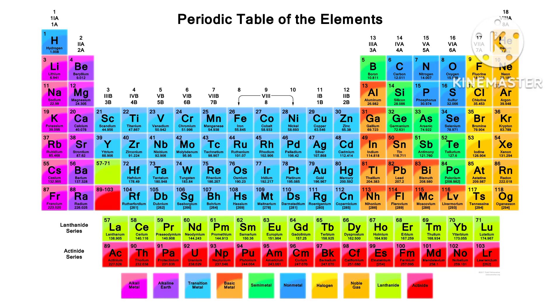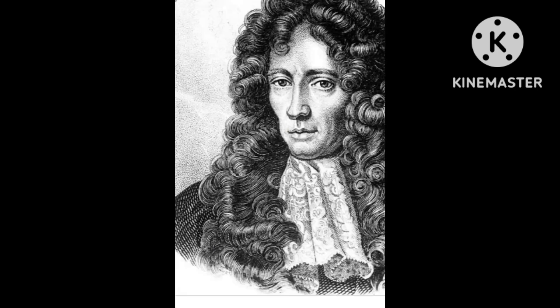Before going to discuss about the periodic table, we have to know how many scientists were involved in its development. Robert Boyle was the first scientist to use the term 'element' in 1661, and he predicted some elements.